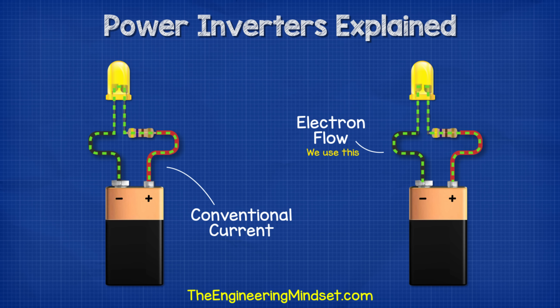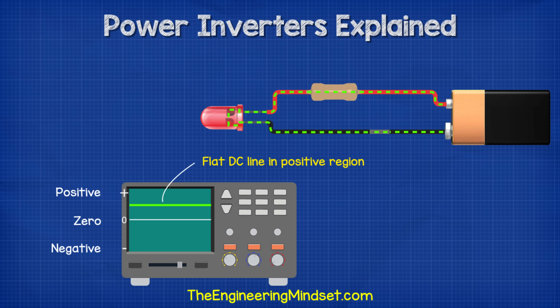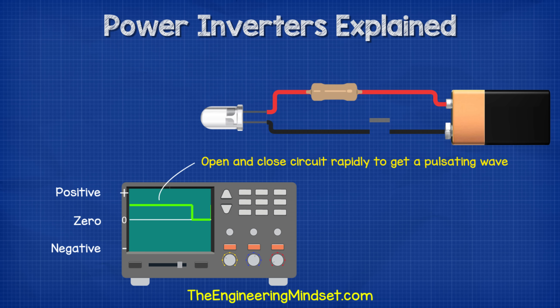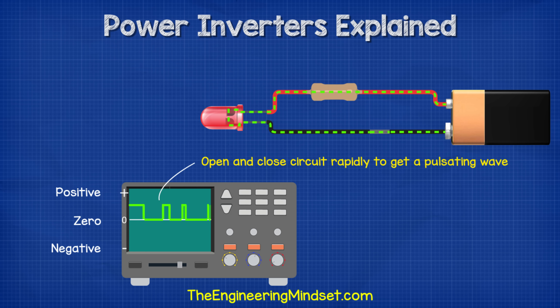Just be aware of the two and which one we're using. When we use an oscilloscope to look at the electrical waveform for DC, we get a flat line at the maximum voltage in the positive region. If we were to cut the power, the line will drop to zero. If we turn the power on and off repeatedly, we get a square wave pattern between zero and maximum. But if we were to pulse the switch to open and close over different lengths of time, then we would get a pulsating pattern.